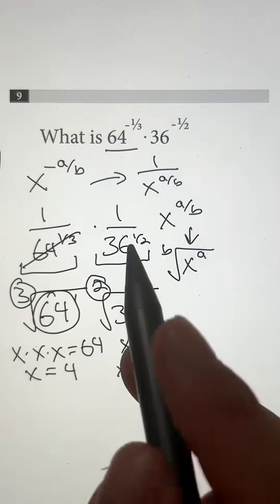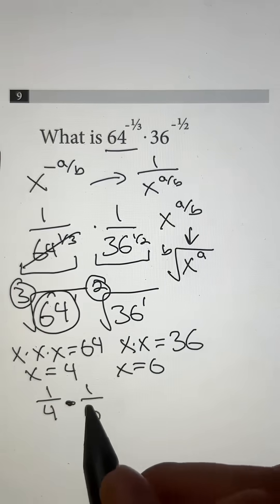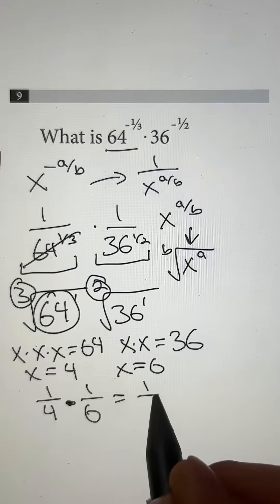Now we still have the numerators on top from before. So if we put together fractions, we get one over four times one over six, multiply out the denominators and we get one over 24.